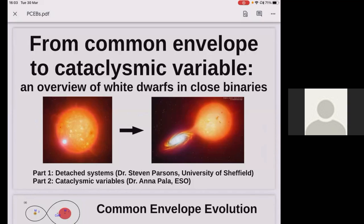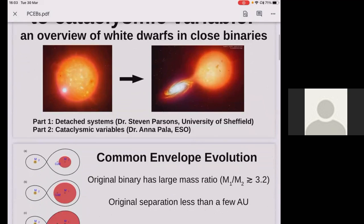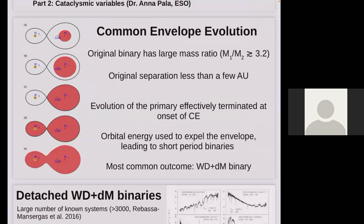We're splitting this between myself and Anna. I'm going to take the detached systems, and then Anna will take over halfway through to talk about the cataclysmic variable systems. Since I only have 10 minutes, I'll get straight into it. I'll start off here with a brief introduction about common envelope evolution.